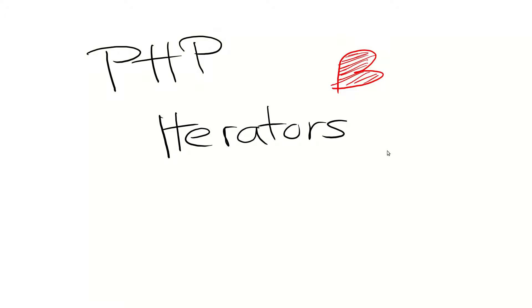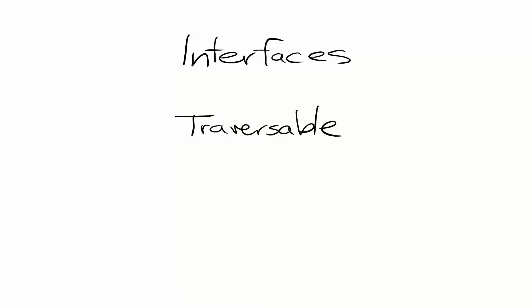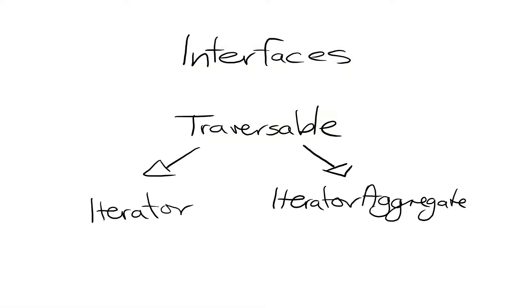In this video I would like to explain how PHP iterators work. You use them when you have an object and you want to iterate with a for-each loop over the object. In order to use the for-each loop you have to implement the traversable interface. But the traversable interface is a basic abstract interface in PHP, which means you can't implement it directly. There are two interfaces you can implement: the iterator interface or the iterator aggregate interface.